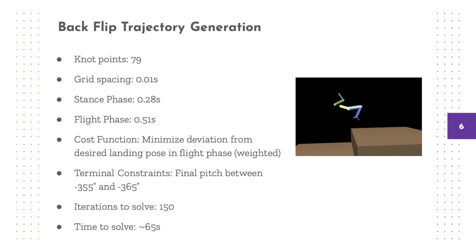The cost function aims to minimize the deviation from a desired landing pose throughout the flight phase. In other words, we tell the robot the position and orientation in which we want it to land. We add a terminal constraint that states that the robot must make a complete backwards rotation. The optimization takes about a minute to solve.